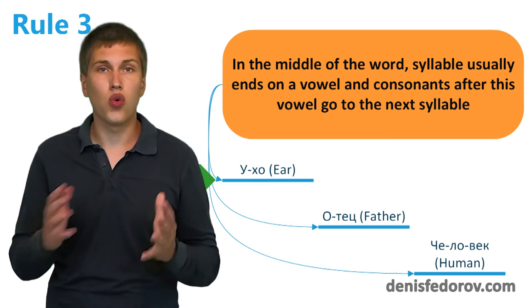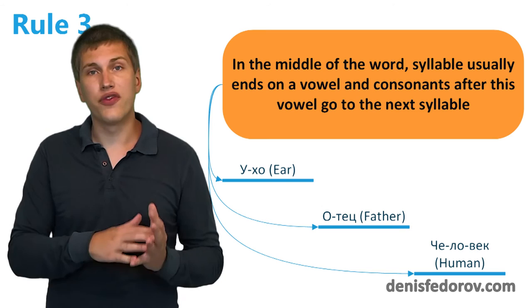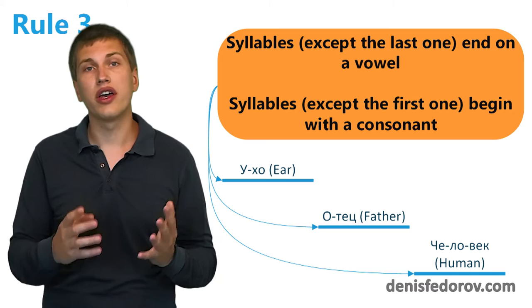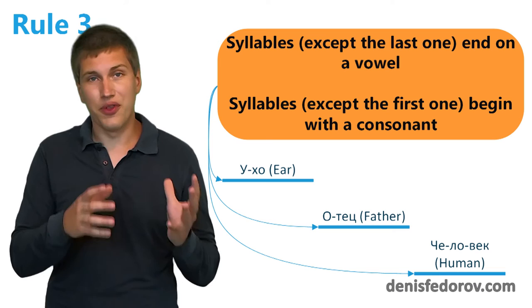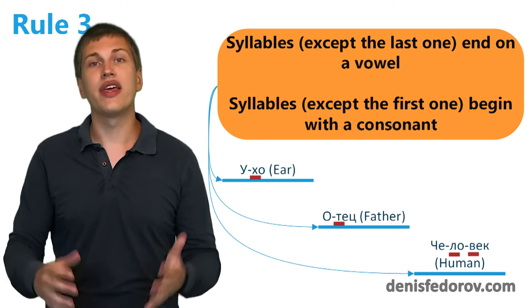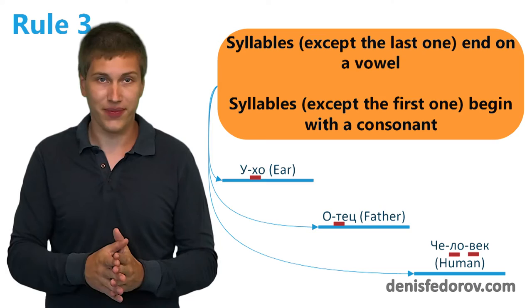Let's take previous examples. УХО, ОТЕЦ, ЧЕЛОВЕК. Let's take the first part of the rule. All syllables except the last one usually end on a vowel. Let's look. Yes, you see? See that? They end on a vowel. The second part: and all syllables except the first one usually begin with a consonant. Oh my God, look! They start with a consonant. You see that? It's amazing. The rule works.